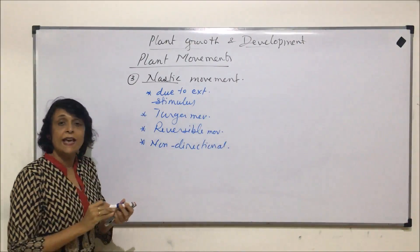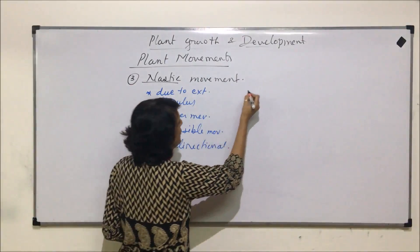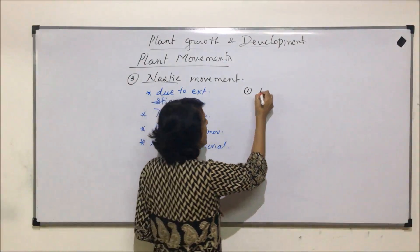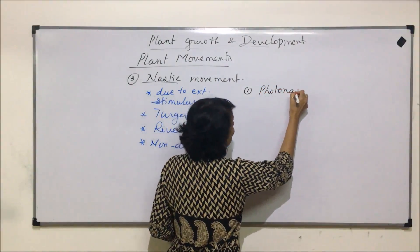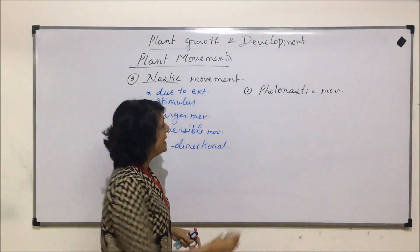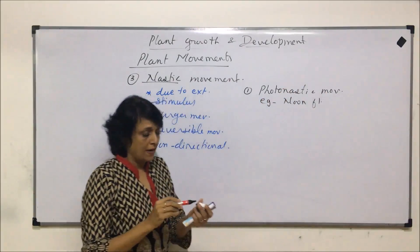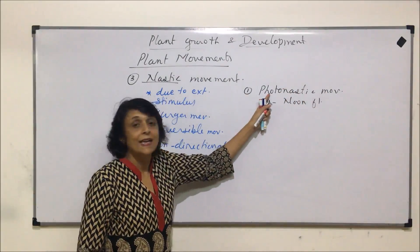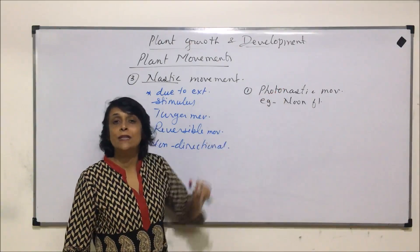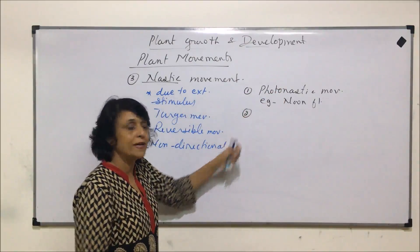These movements are due to external stimuli, which can be of various types. For example, if light is the stimulus, the movement is known as photonastic movement. This movement is seen in noon flowers, where the flowers open up as sunlight intensity increases, which is why it is called photonastic movement.